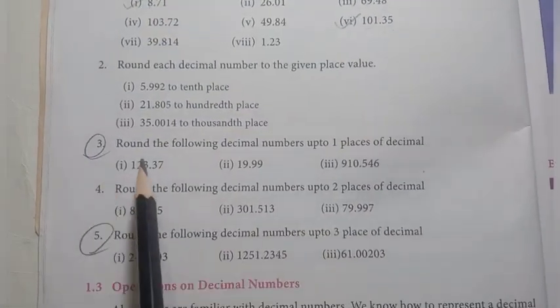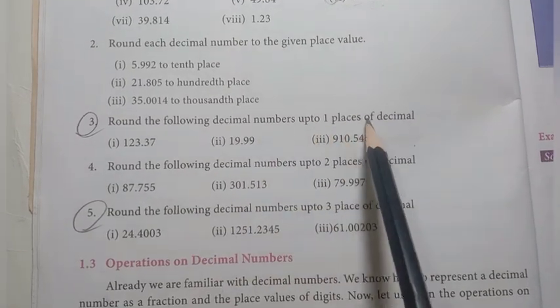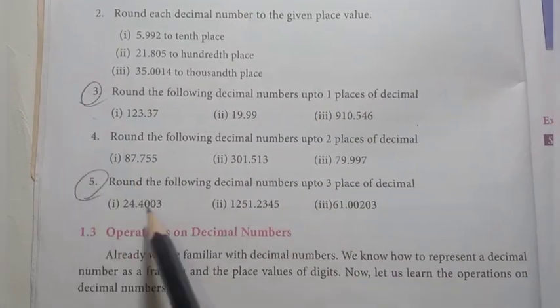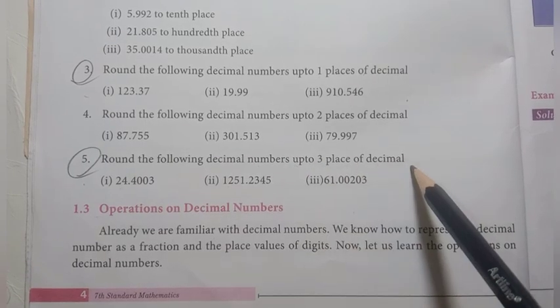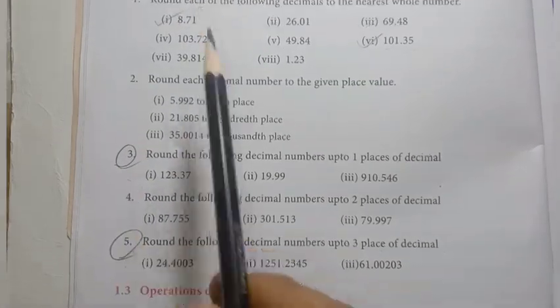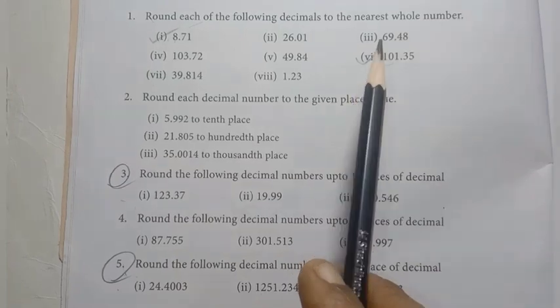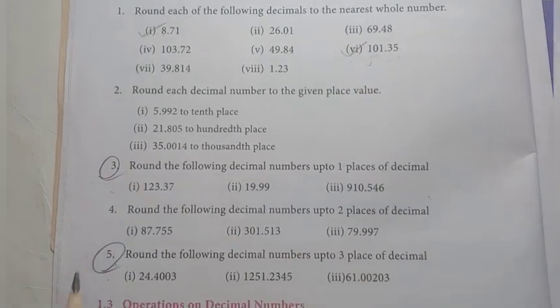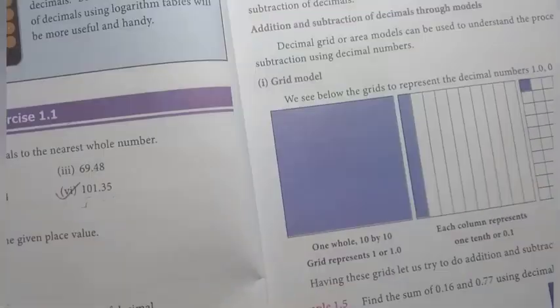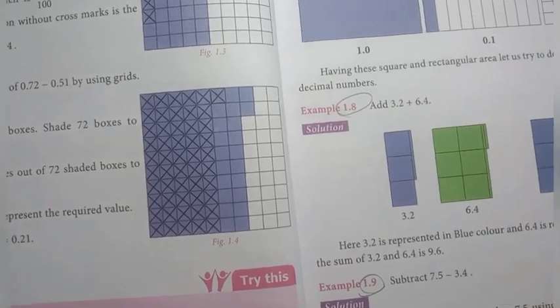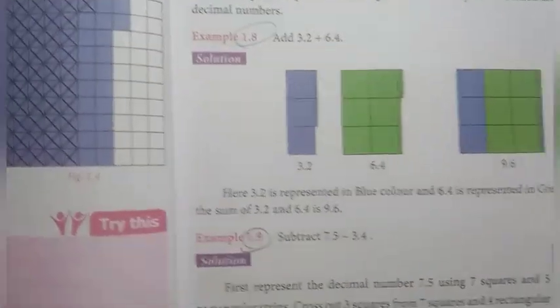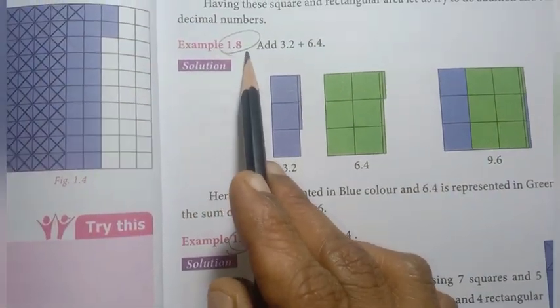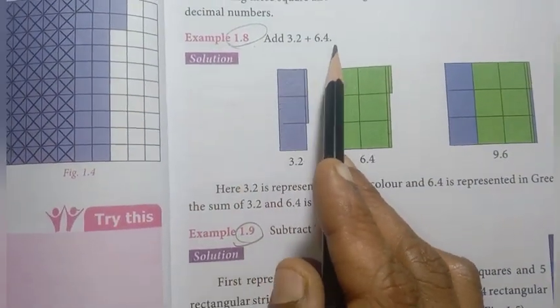Third question: round the following decimals up to 1 place of decimals — this is an important question. Fifth question: round the following decimals up to 3 places of decimals. This covers number 2.2 plus 6.4.